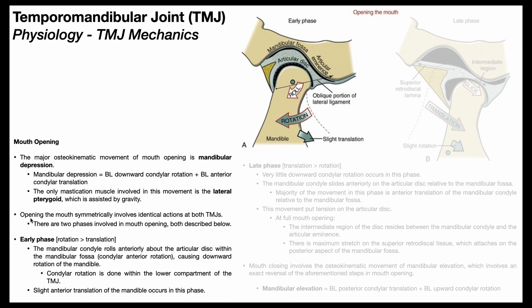Another important fact is that for any symmetric movement of the mandible — mandibular depression, elevation, protrusion, or retrusion — you have to have identical actions at both TMJs. So they're both doing the same thing at the same time, left and right. You can't move about the left TMJ without having the same movement at the right TMJ. So all the movements we're about to discuss are occurring bilaterally at both temporomandibular joints. With that said, let's go into the early phase of mouth opening.